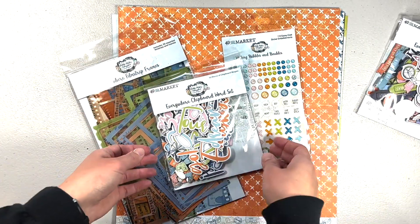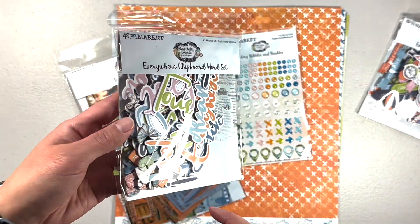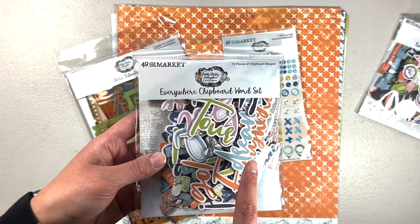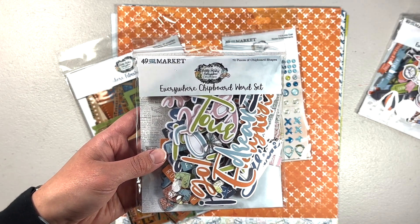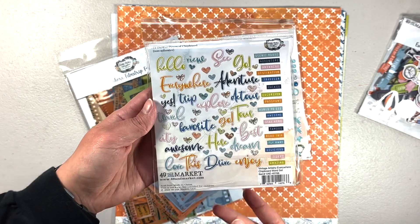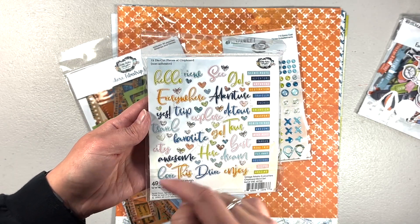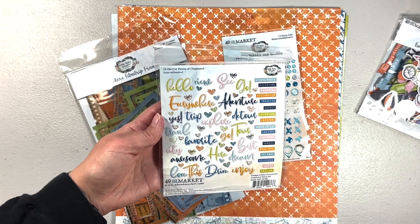Then I got the Everywhere chipboard word set. I am always up for titles that are already pieced together for me. Here are some of the titles: hello, view, see, go, adventure, everywhere.